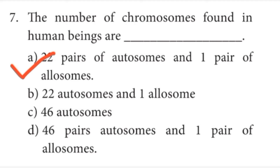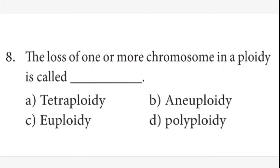Eighth question: chromosomes in aneuploidy is called dash. Answer is B option, aneuploidy.